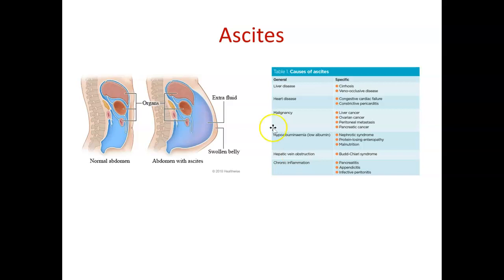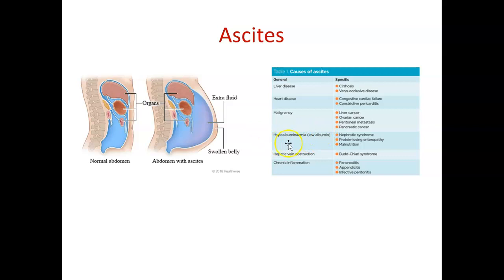Ascites, also called third spacing, is an increase in peritoneal fluid — basically edema in your abdomen. We know that if osmotic pressure should fall, we'd expect that to cause a problem. If we don't have enough albumin, osmotic pressure falls, which is why we look at liver disease. Albumin is one of the main components of osmotic pressure.